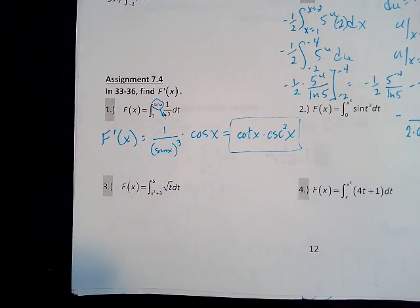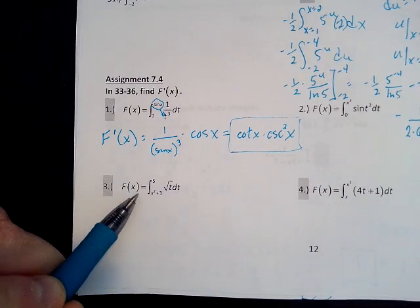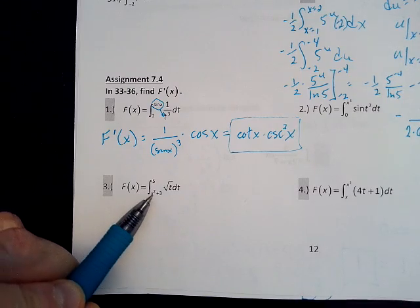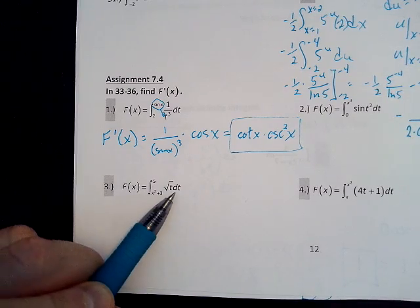This is the solution video for section 7.4, problem number three. So we have capital F of X equals the integral from X squared plus 3 to 5 of the square root of T dt.